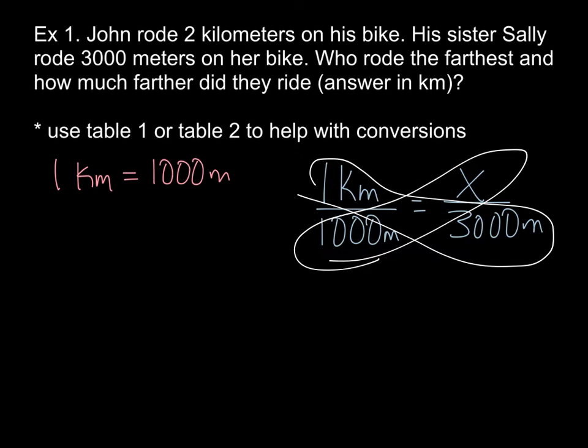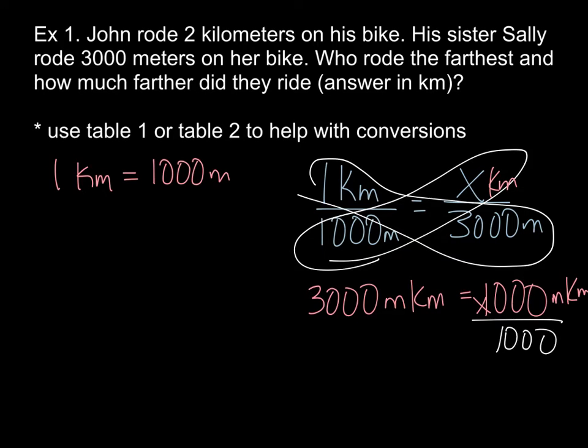And that is definitely correct. But I want to show you the cross multiplication of this proportion. So you end up with, when you do that, you get your 3,000 meter kilometer is equal to 1,000 kilometer meter with an X attached to it. So in the math behind it, you would divide both sides by 1,000. And you would end up with X is equal to 3 kilometers. So if you can see it right away, that's totally fine. But just wanting you to understand and see where the proportion is behind it.